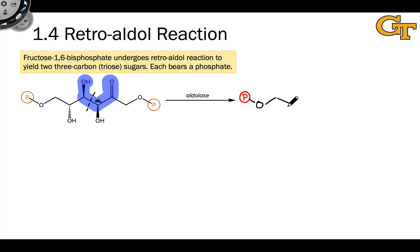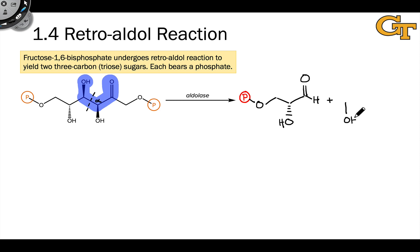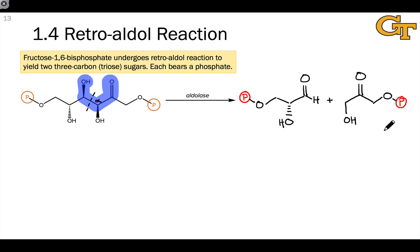In the reverse direction, the bond that breaks gives the left half of fructose bisphosphate as an aldehyde — specifically glyceraldehyde-3-phosphate, with an aldehyde group at carbon-1, a hydroxyl group at carbon-2, and a phosphate group at carbon-3. The second product of the retroaldol reaction is a ketone with a hydroxymethyl group on one side of the carbonyl and a phosphomethyl group on the other side — dihydroxyacetone phosphate. We'll abbreviate these as DHAP and G3P.